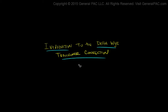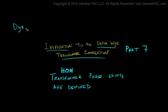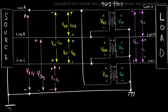Introduction to the Delta-Y Transformer Connection, Part 7. In this section, we're going to take a look at how these transformer phase shifts are actually defined. Throughout this series, I've been using this definition for this transformer connection. This is a formal way of defining it and this is an informal way of defining it. So we'll take a look at how to interpret these two things. To really understand the phase shift for the Delta-Y Transformer Connection, we have to understand the quantities that we're actually defining. We'll take a few moments to go over this very quickly.